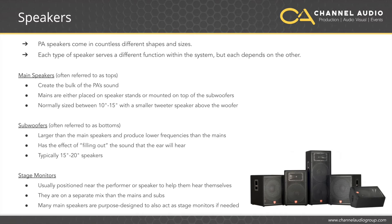Each type of speaker serves a different function within the system, but each depends on each other. Those main speakers create the bulk of the PA sound. In basic PA systems, the main speakers are either placed on speaker stands or mounted on the subwoofers. Main speakers in your basic PA system are normally sized between 10 and 15 inches, with a smaller tweeter speaker above the woofer.